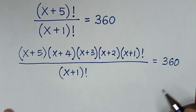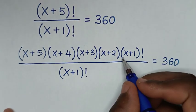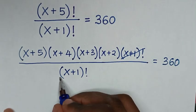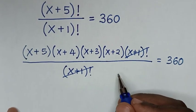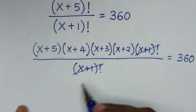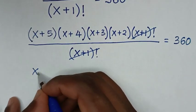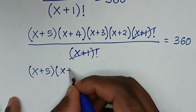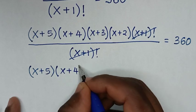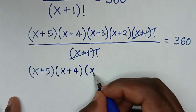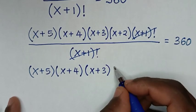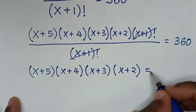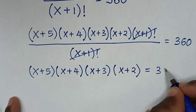In the next step we simplify: the (x+1)! in the numerator will cancel with the (x+1)! in the denominator. Then we are left with (x+5)(x+4)(x+3)(x+2) is equal to 360.